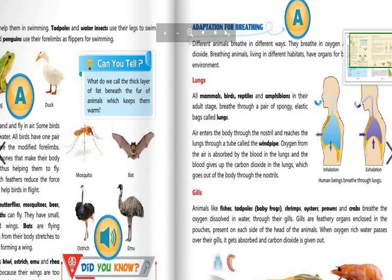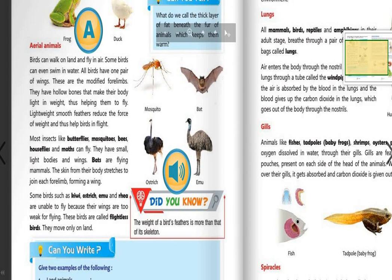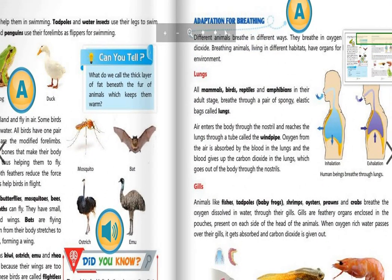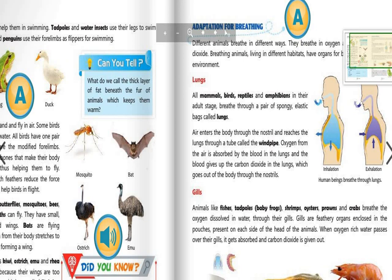As a student, this video lecture is for Class 5, Lesson 2, Part 3. In the last part we discussed adaptation in aerial animals. Now we will see adaptation for breathing in different animals. So let's start.